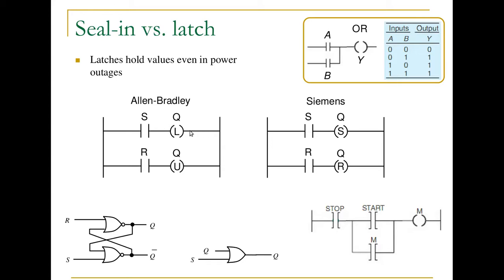If you modify a bit in one place in your program and then modify it again in another place, your first assignment will get overwritten. So it's better practice to assign a value to a bit once, at one place in the program. Those are the reasons why you'd want to use a latch versus a seal-in, or vice versa.